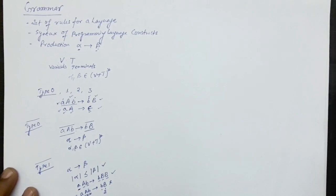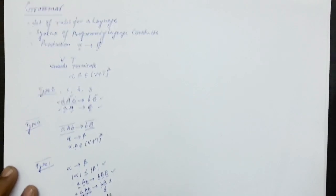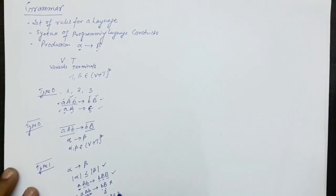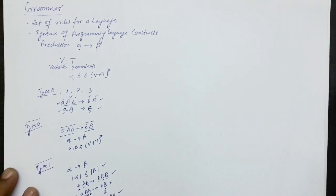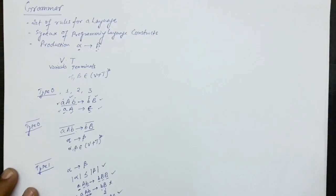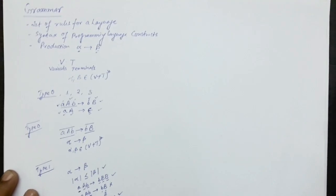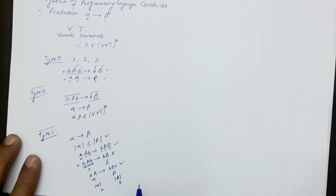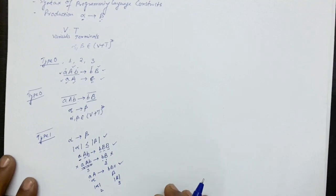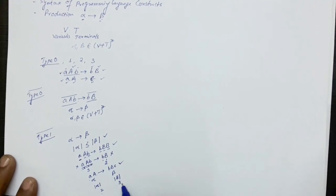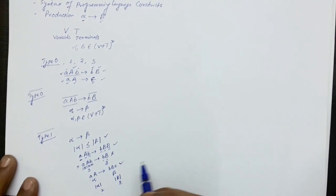Another example: the production AA produces bBc can also be of type 1. If alpha is AA and beta is bBc, the number of symbols on the left hand side is 2 and on the right hand side is 3. Since 2 is less than or equal to 3, this is acceptable. This is a valid type 1 grammar.